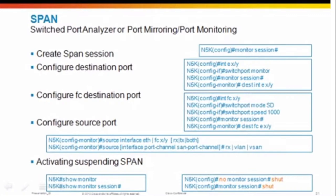To monitor traffic between hosts and switched traffic on the 5K, use SPAN — Switch Port Analyzer. Configuration is similar to IOS. One difference: to span Fibre Channel traffic, go into your Fibre Channel interface and set the switchport mode to SD. For Ethernet traffic, the configuration is about the same. Configure your source port and view your SPAN session with the 'show monitor' command, similar to IOS. Don't forget to un-shut your monitoring session to activate it, or shut it to deactivate it.